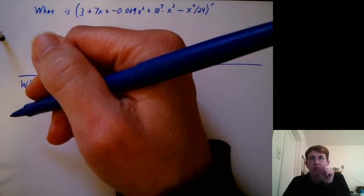So the function is 3 plus 7x plus negative 0.009x squared plus 10 to the seventh times x cubed minus x to the fourth over 24.